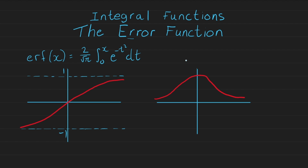The Gaussian distribution has the form 1 over the square root of 2π times e to the minus x squared over 2. You can see it's very similar to the form of the error function, where we have e to the minus t squared, and here e to the minus x squared over 2.